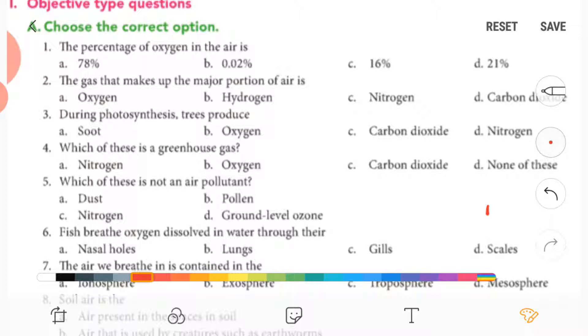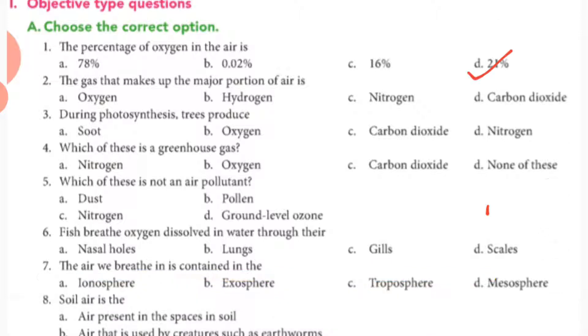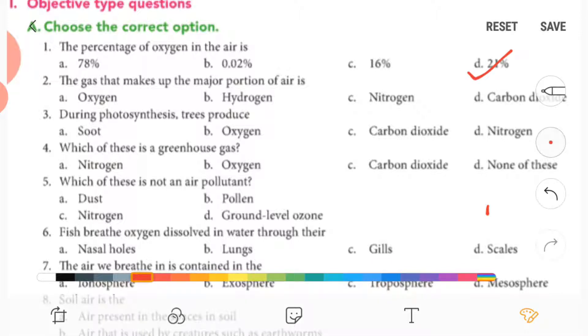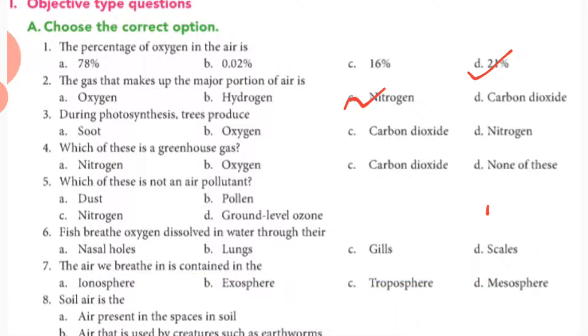Hello guys, Standard 6, Chapter number 16, Air Around Us. Let's solve the exercise. The first MCQ is the percentage of oxygen in the air is 21%. Second, the gas that makes up the major portion of air is nitrogen.